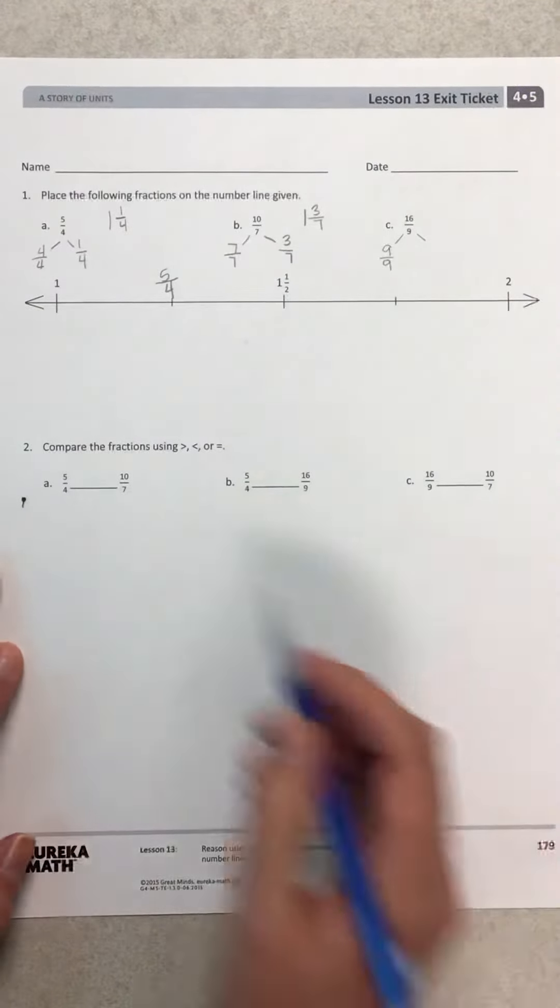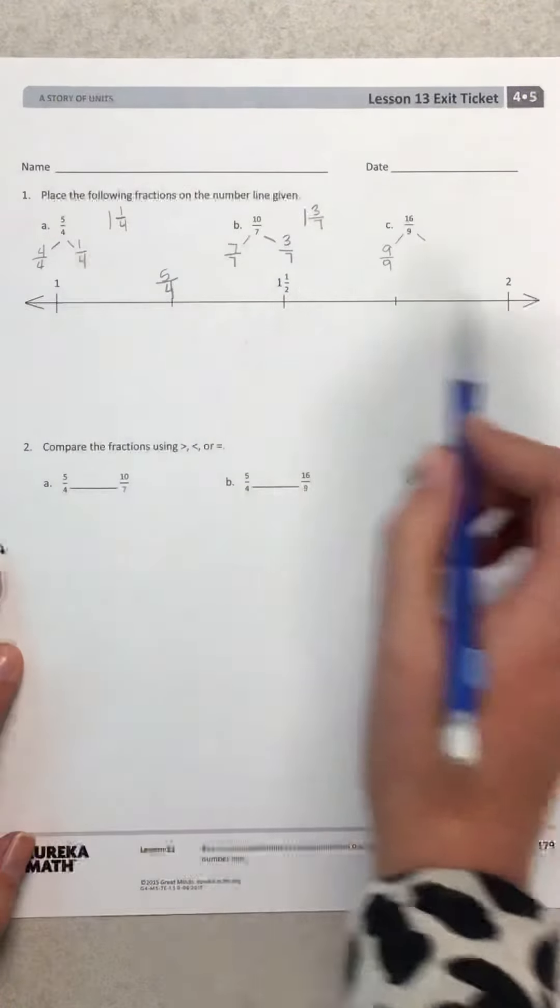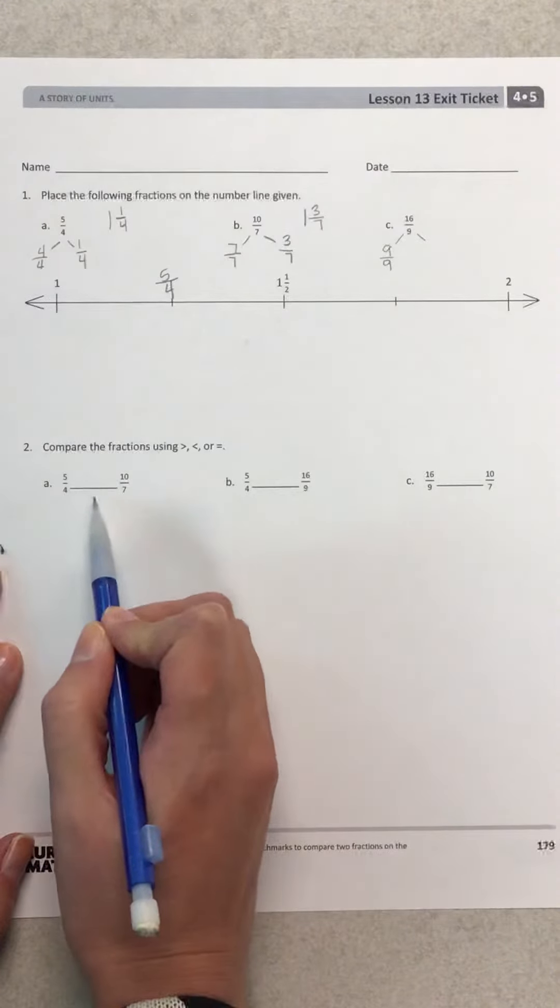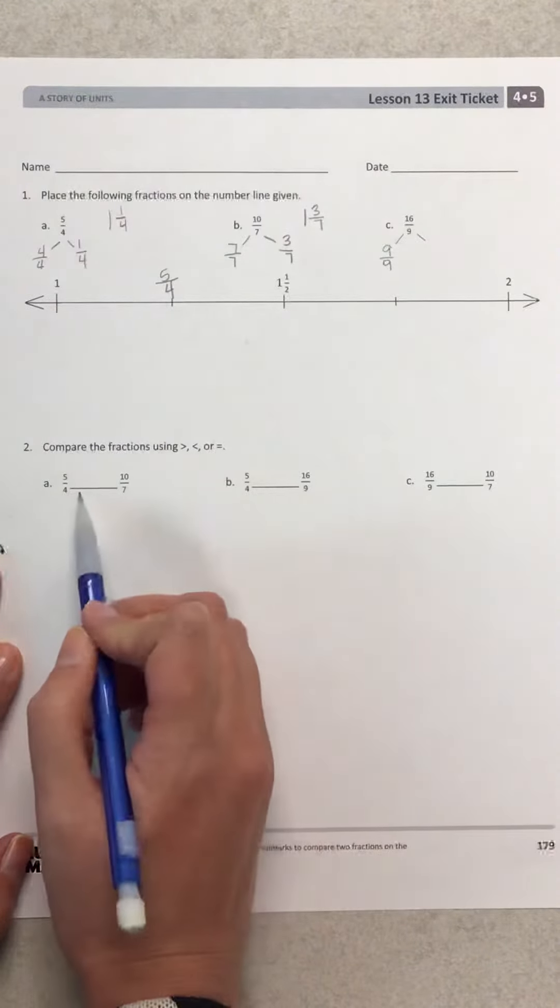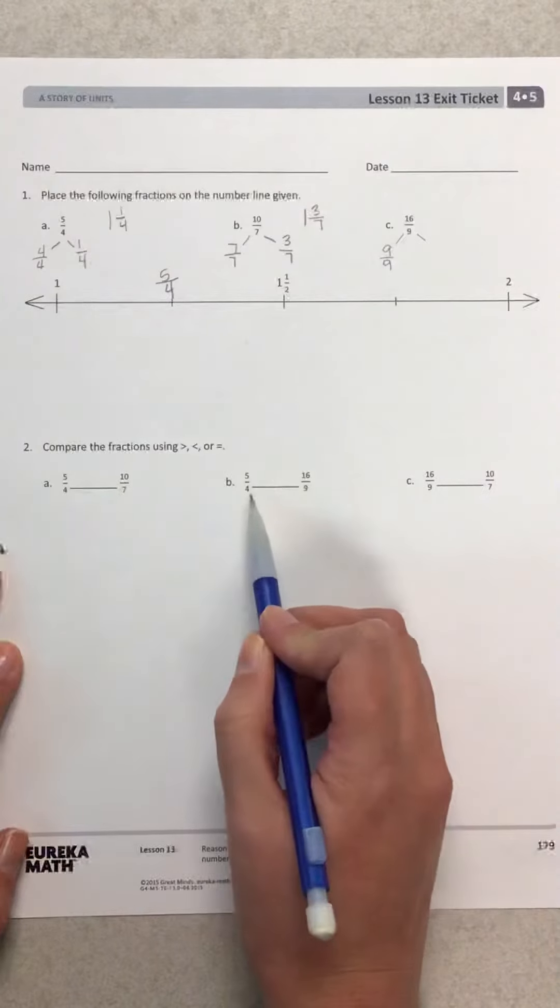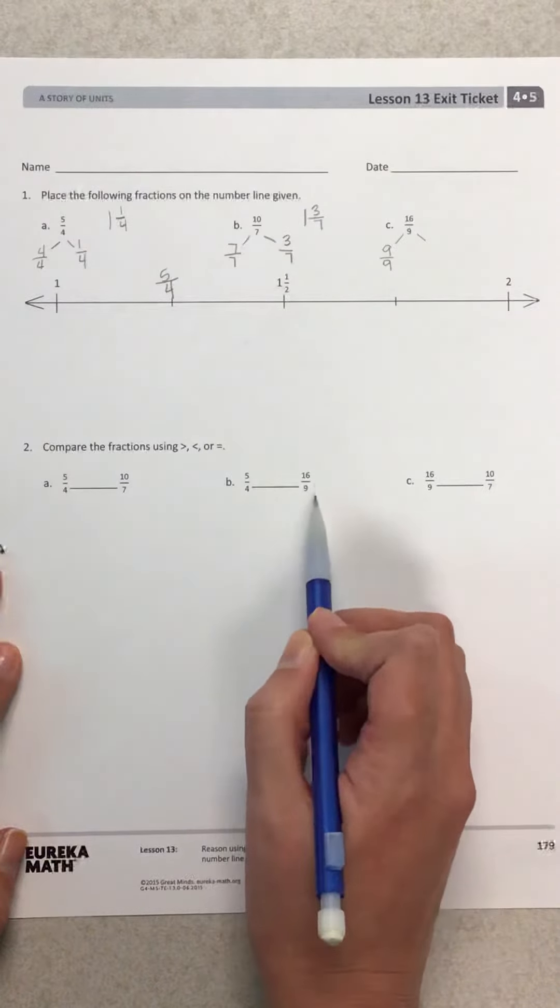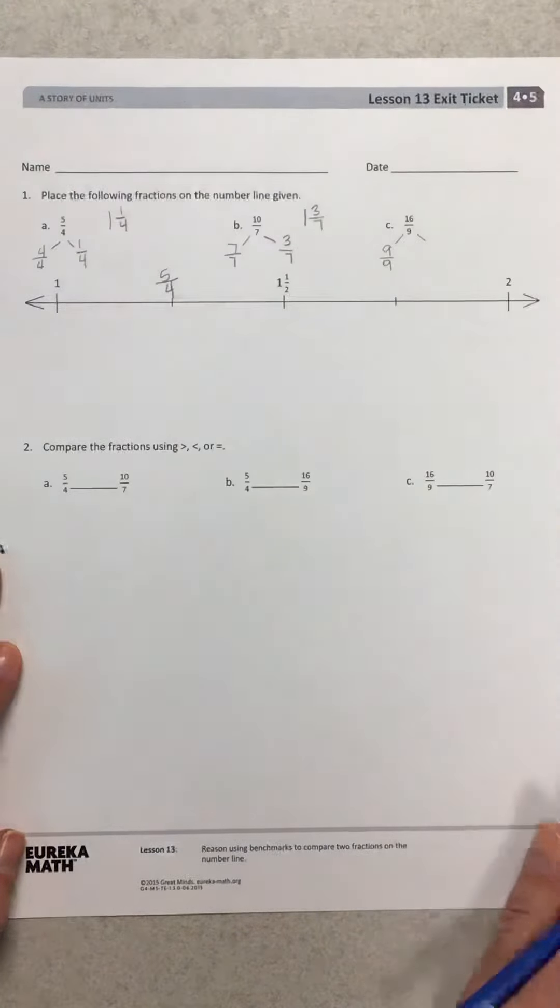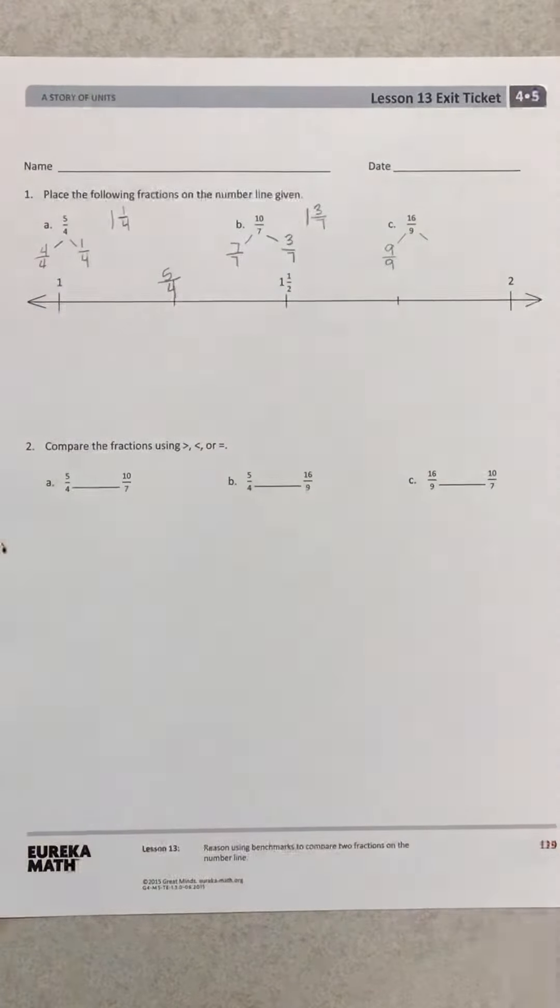The last part is showing us now that we've drawn them on our number line, we can compare them. 5 fourths is greater than, less than, or equal to 10 sevenths. 5 fourths and 16 ninths. And then 16 ninths and 10 sevenths. So your job is to compare those, and then you are finished for the day. Great working, friends.